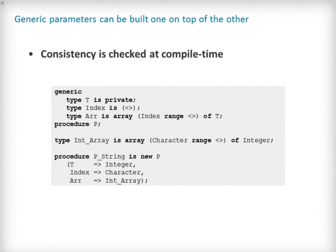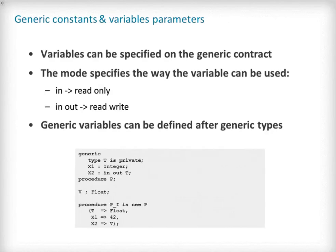I would also like to point out that using named parameters when instantiating generic units is particularly useful for ensuring the contract is adhered to. Now we have looked at generic types, we move on to variable parameters that can appear in a generic contract. First we will look at variables that can use the same mode as parameters to a procedure or function, namely in, out, and in out.